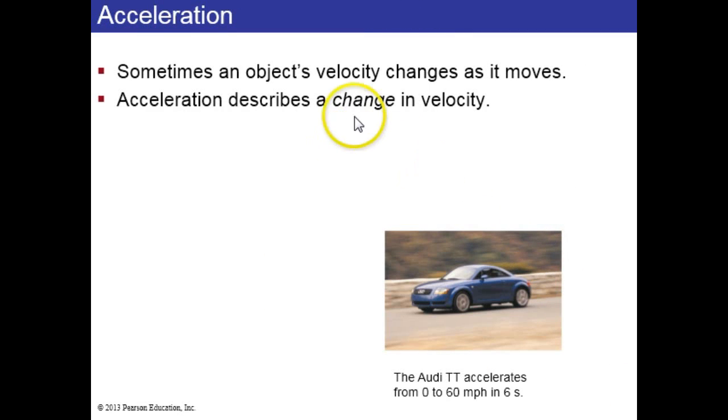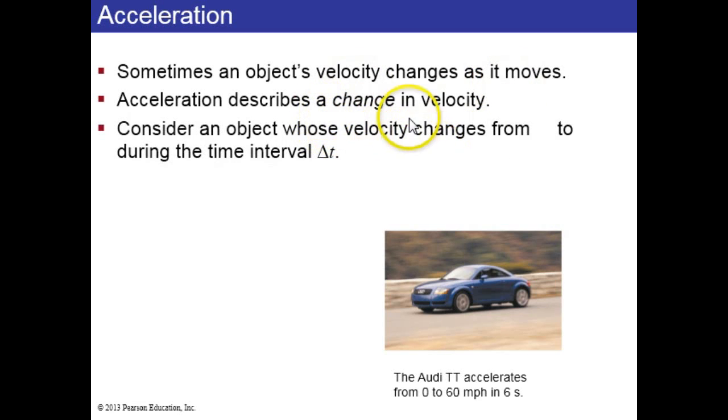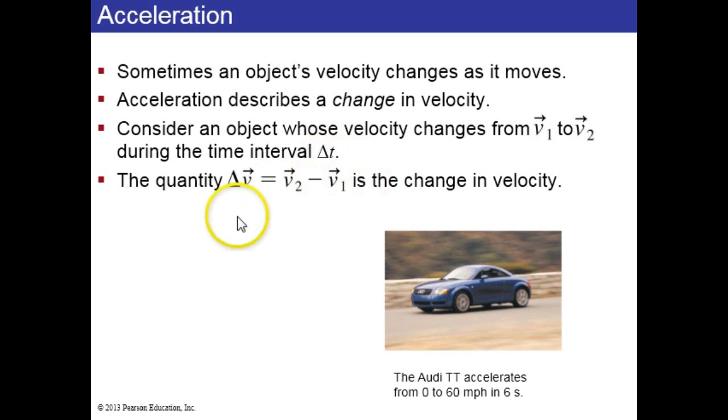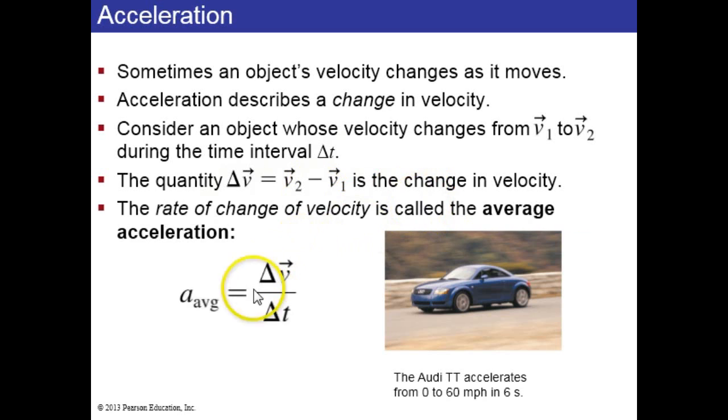Sometimes an object's velocity changes as it moves. This means it's accelerating, and we say acceleration is the rate of change of velocity. So if something goes from v1 to v2 in an interval delta t, delta v is the change in velocity, and the average acceleration is delta v divided by delta t. You can measure the acceleration of a car, for example, if you know that it accelerates from 0 to 60 miles an hour in 6 seconds. You take the delta v, which would be 60, and divide it by 6. And you get 10 miles per hour per second.